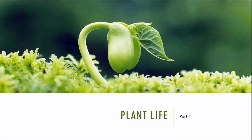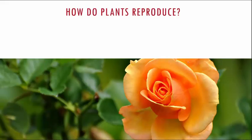Hi kids, let us learn all about plants in a new chapter called plant life. Under this, let us first talk about how plants reproduce. Plants reproduce in many different ways. Flowering plants produce seeds, while mushrooms and molds produce structures called spores, and some plants even reproduce with the help of their body parts. Let us see how reproduction in plants takes place in various ways.